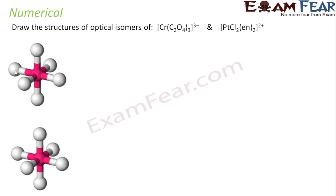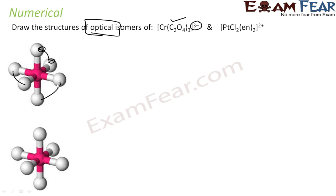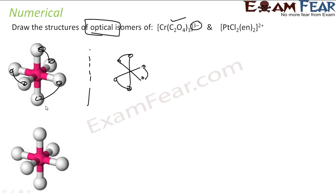Now let's draw the structure of optical isomers of Cr(C2O4)3 3−. From the geometrical isomers perspective, we have seen there is only one possibility for Cr(C2O4)3 3−. But if you take a mirror image of this structure, it will be non-superimposable. This and this will form a bond, and these two structures are non-superimposable — thus one will be dextro-rotatory and the other levo-rotatory, deflecting polarized light to the right and left respectively.